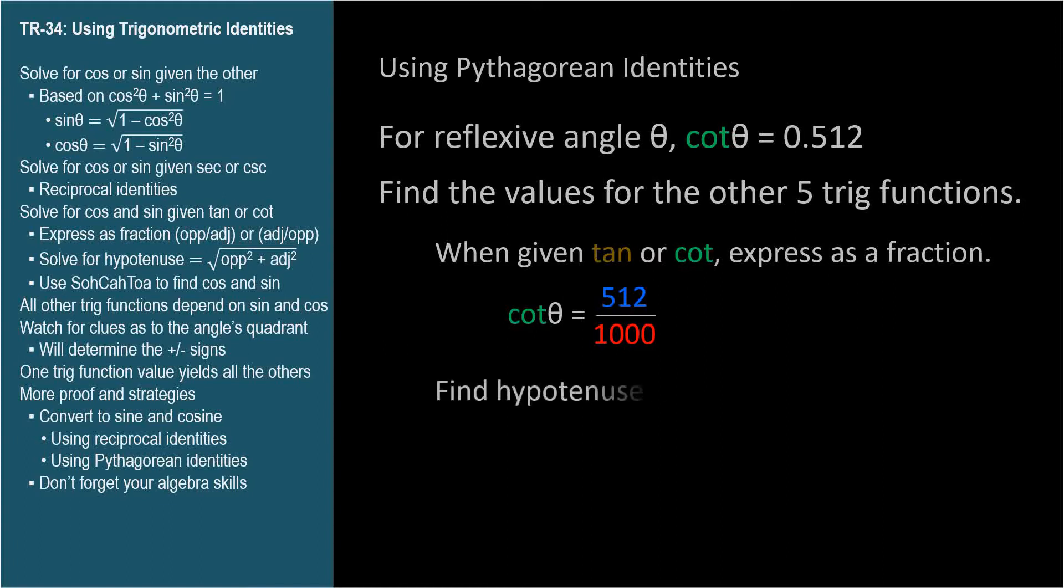Now we need to find the hypotenuse of the right triangle. Well, what triangle? Well, remember cotangent is adjacent over opposite, and we have a fraction for cotangent. So let's draw a triangle, it doesn't have to be to scale, with angle theta, and label the adjacent side 512, and the opposite side 1000, to match our adjacent over opposite fraction.